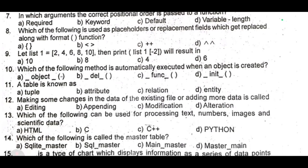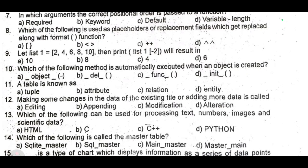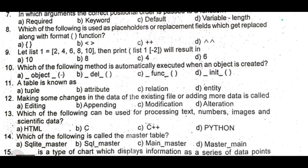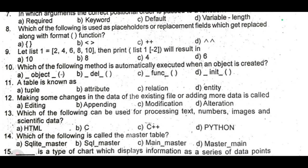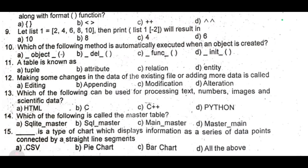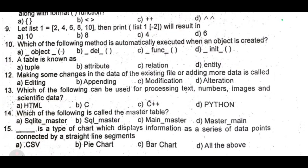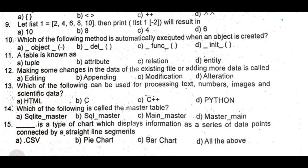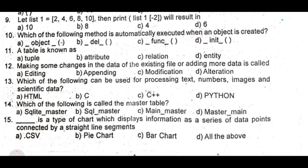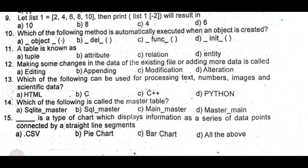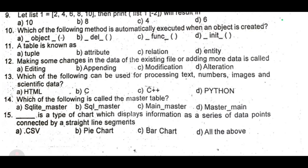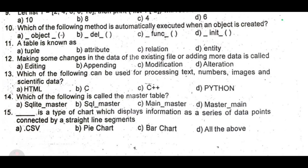Twelfth: making some changes in the data of the existing file or adding more data is called blank. Thirteenth: which of the following can be used for processing text, numbers, images, and scientific data? Fourteenth: which of the following is called the master table? Fifteenth: blank is a type of chart which displays information as a series of data points connected by straight line segments. So these are the one-mark questions.